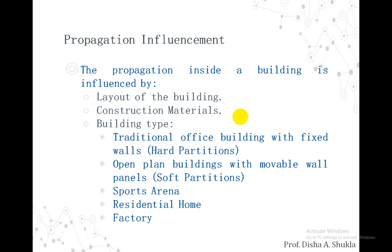The construction material used also affects propagation. The building type is another parameter: it can be a traditional office building with fixed walls, that is hard partitions, or it can be an open-plan building with movable wall panels, that is soft partitions. The type of building — whether a residential home, office, sports arena, or factory — also influences indoor propagation.